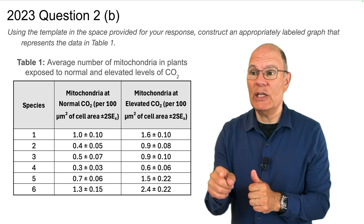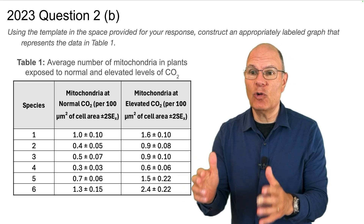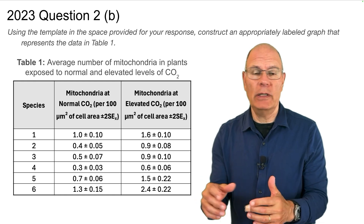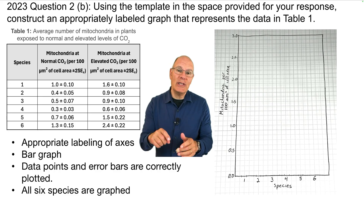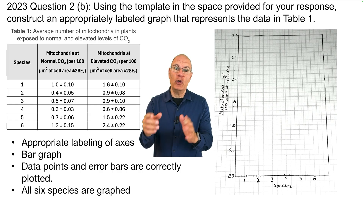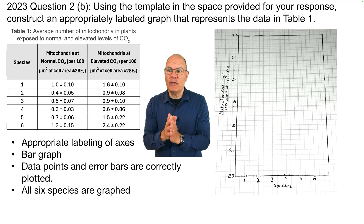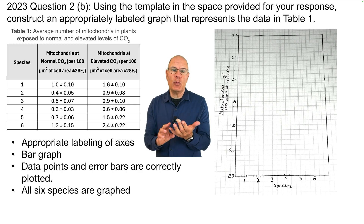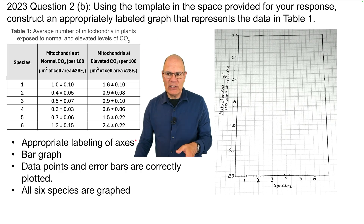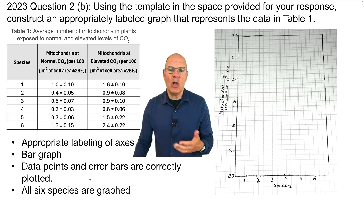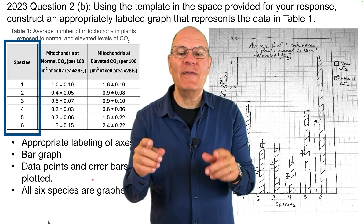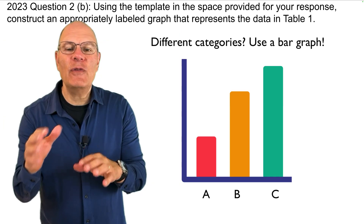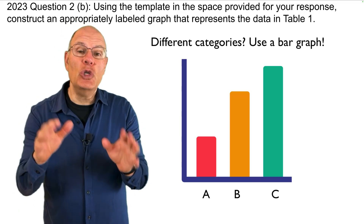Question 2B: using the template provided, construct an appropriately labeled graph representing the data in table one. Grab a piece of graph paper, draw your graph, and press play when ready. The College Board is looking for appropriately labeled axes, a bar graph with correctly plotted data points and error bars for all six species. This must be a bar graph because the independent variable is six different species — when you have different categories, you use a bar graph.